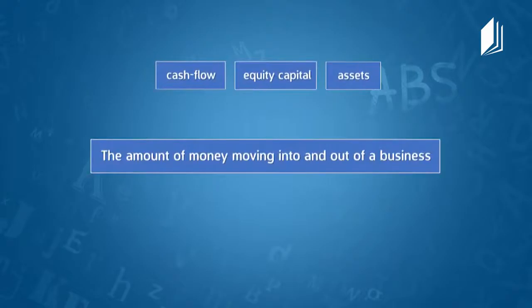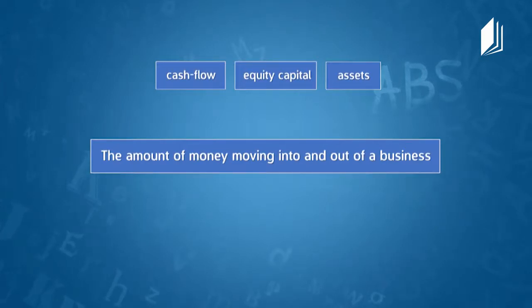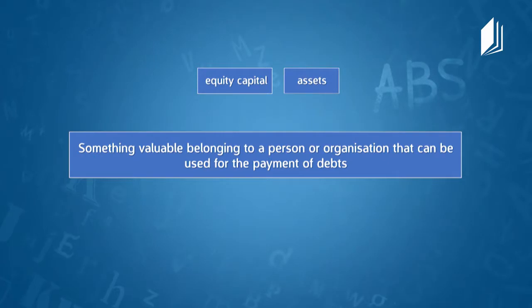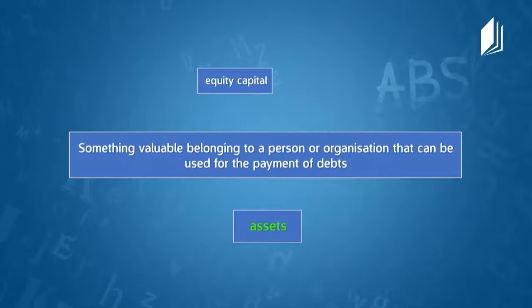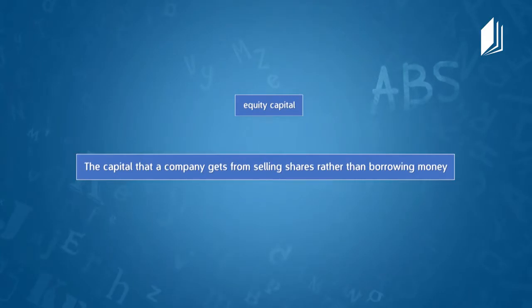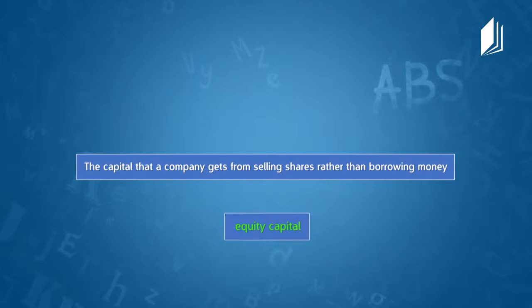Next definition: 'The amount of money moving into and out of a business.' That's cash flow. Then: 'Something valuable belonging to a person or organization that can be used for payment of debts' — and you mentioned that knowledge can also be this. That is assets. And the last one: 'The capital that a company gets from selling shares rather than borrowing money' — that's called equity capital.